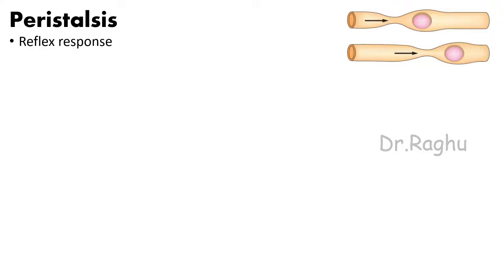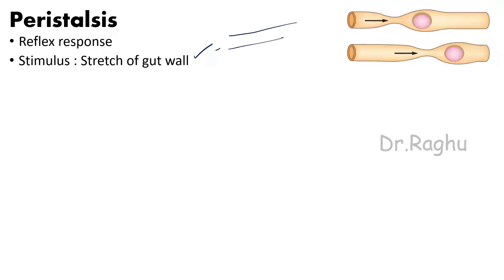Peristalsis is a reflex response. The stimulus for this reflex is stretch of the gut wall, caused by the chyme present in the gut. When chyme enters the intestine and the intestinal wall stretches, this stretch initiates a circular contraction just behind the stimulus and an area of relaxation in front of the stimulus.